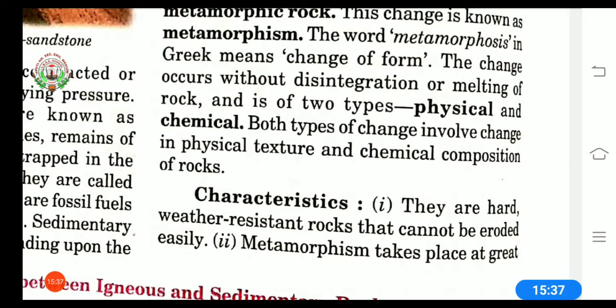First is the physical change, another is chemical change. Physical change that we can see through our eyes, we can see the changes like physical texture or size or bonding or which type of rock that is. And chemical composition of that rock that we can't see but we can check.